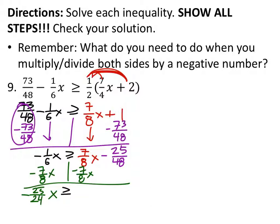Now this is still greater than or equal to, but we've zeroed out that seven-eighths x in red, and we're just going to drop this negative twenty-five-forty-eighths right there.